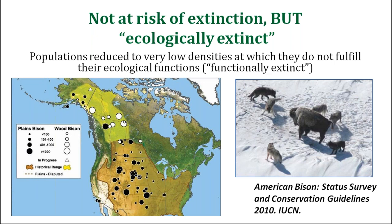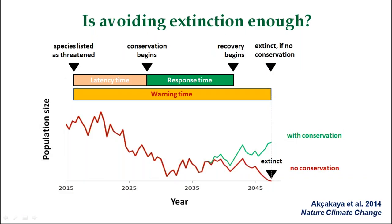We still cannot consider American bison recovered, because it is at such low density that it is not performing its functions it used to do in the Great Plains of North America — functions such as creation of landscape heterogeneity through grazing and wallowing, nutrient redistribution, or creation of habitat for many other species like butterflies, grassland birds, prairie dogs, and other species. All of these examples point to the fact that extinction risk, while perhaps the most important conservation metric, is not the only relevant one. Avoiding extinctions is not enough — we want species recovered.